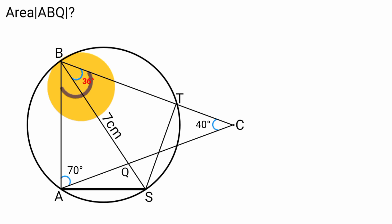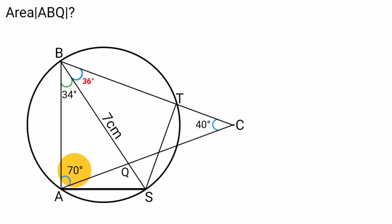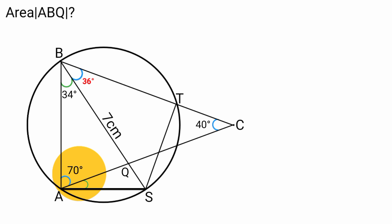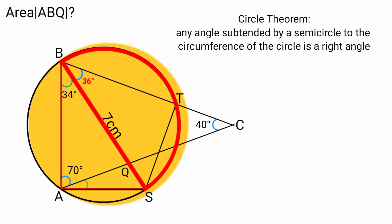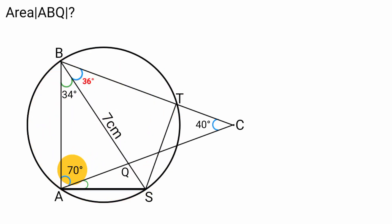If the whole base angle is 70 degrees and one part is 36 degrees, then the remaining part is 70 minus 36 equals 34 degrees. From triangle ABS, since BS is a diameter of the circle, the angle subtended by a semicircle to the circumference is a right angle. Therefore that angle is 90 degrees, and the remaining angle is 90 minus 70 equals 20 degrees.